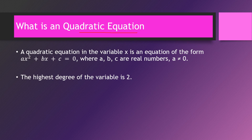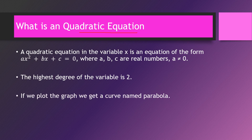The highest degree of the variable is 2. If I plot the graph of this quadratic equation, we always get a curve. That curve is named a parabola, which you will learn about in later standards.